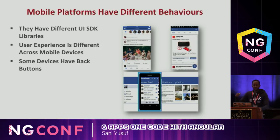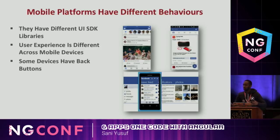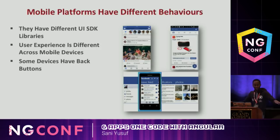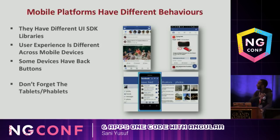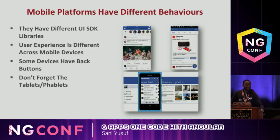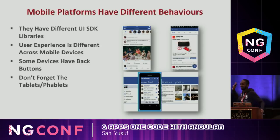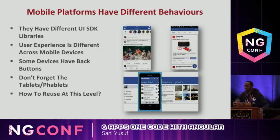Last year they removed the headphone jack, this year they removed the button, next year they probably remove the screen. Don't forget the tablets and the phablets - those confused phones. So how do you reuse at this level? Let's visualize the problem. This is a native app - the native SDKs give you gestures, buttons, tabs, animations. The best engineers of iOS and Android came together and said how can we give people a great user experience? Using native is like: I want you to create me furniture but I buy you IKEA - just follow some instructions, plug and play.